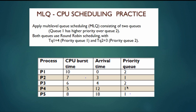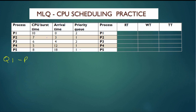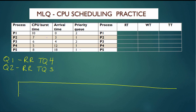In this case, we have five processes which are Q1 and Q2. Q1 has round-robin with a time quantum of 4, and Q2 has round-robin with a time quantum of 3. So let's get started. Just to remember: Q1 is round-robin with a time quantum of 4, and Q2 is round-robin with a time quantum of 3. I'm going to draw my Gantt chart and we'll get started at time 0.